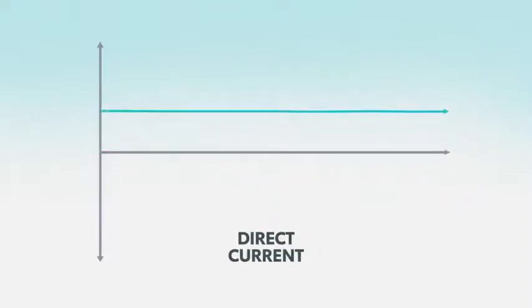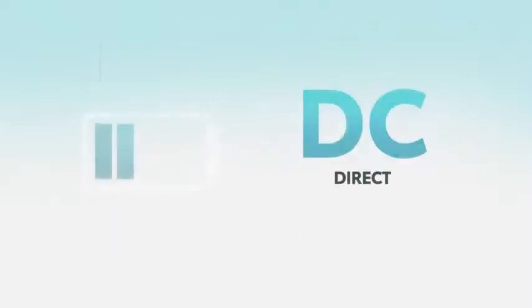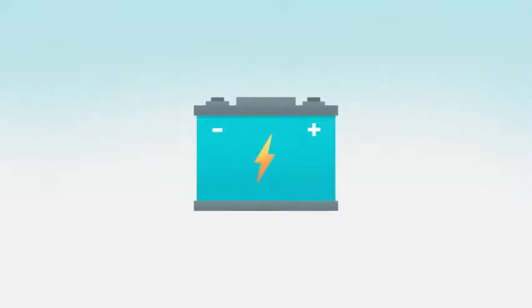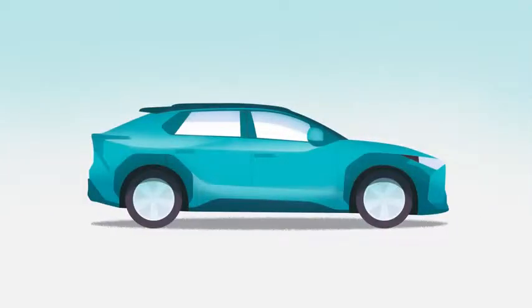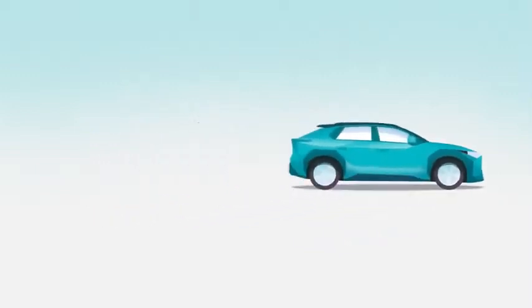Batteries, on the other hand, work off of direct current, DC. They charge with DC, and they output DC. And this is true whether for the AAA batteries in a TV remote, the 12-volt battery under the hood of a car, or the large onboard batteries used to drive the wheels of an electric vehicle.